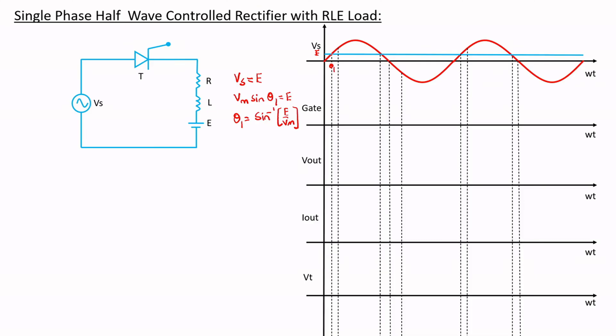From theta1 onward, Vs is greater than E. In the positive half cycle when Vs > E, the anode is at higher potential than the cathode, so the SCR is in forward blocking mode. When we apply a gate pulse at a chosen instant, the SCR moves from forward blocking mode to forward conduction mode. It acts as a short circuit and starts conducting — current flows through the circuit and through the load.